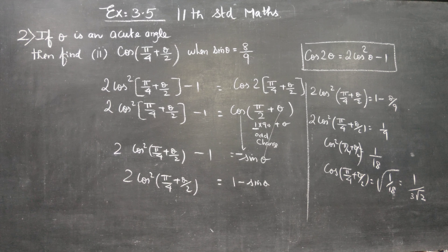Taking the square root: cos (pi by 4 plus theta by 2) equals square root of 1 by 18, which simplifies to 1 by 3 root 2. Since theta is an acute angle in the first quadrant, the answer is positive. Therefore, the final answer is 1 by 3 root 2.